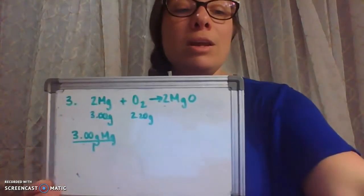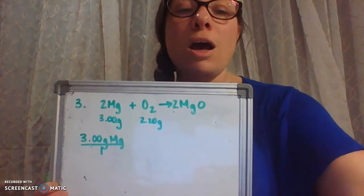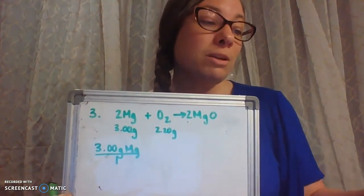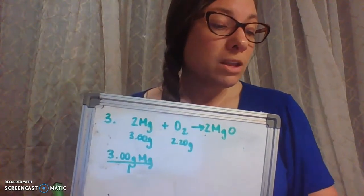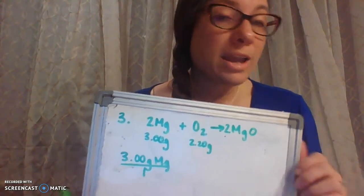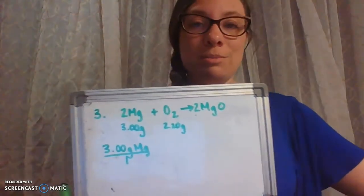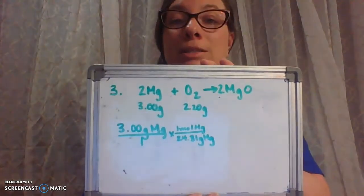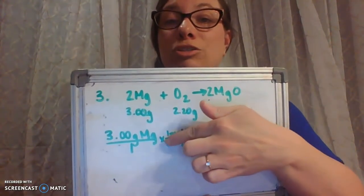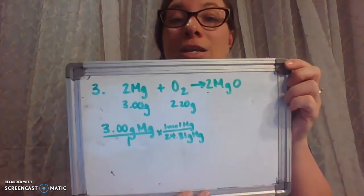So three grams of magnesium is what we're starting with. Make sure you have your periodic tables. We're going to start by converting three grams of magnesium using our roadmap into moles — magnesium is substance A. One mole of magnesium is equal to 24.31 grams, pulled right from the periodic table. Grams of magnesium goes on the bottom to cancel out, and one mole of magnesium goes on top.